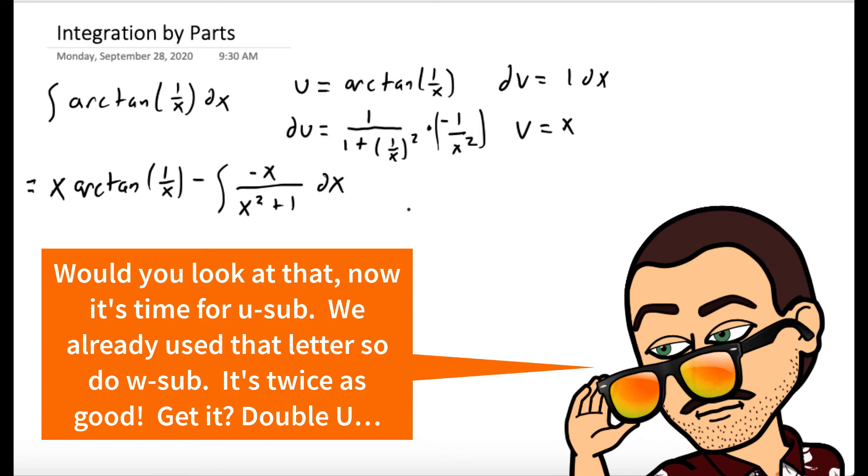And to evaluate the integral of negative x over x squared plus 1, we would do u substitution. We've already used u, so let's use the letter w. w is x squared plus 1. The derivative of w is 2x dx.